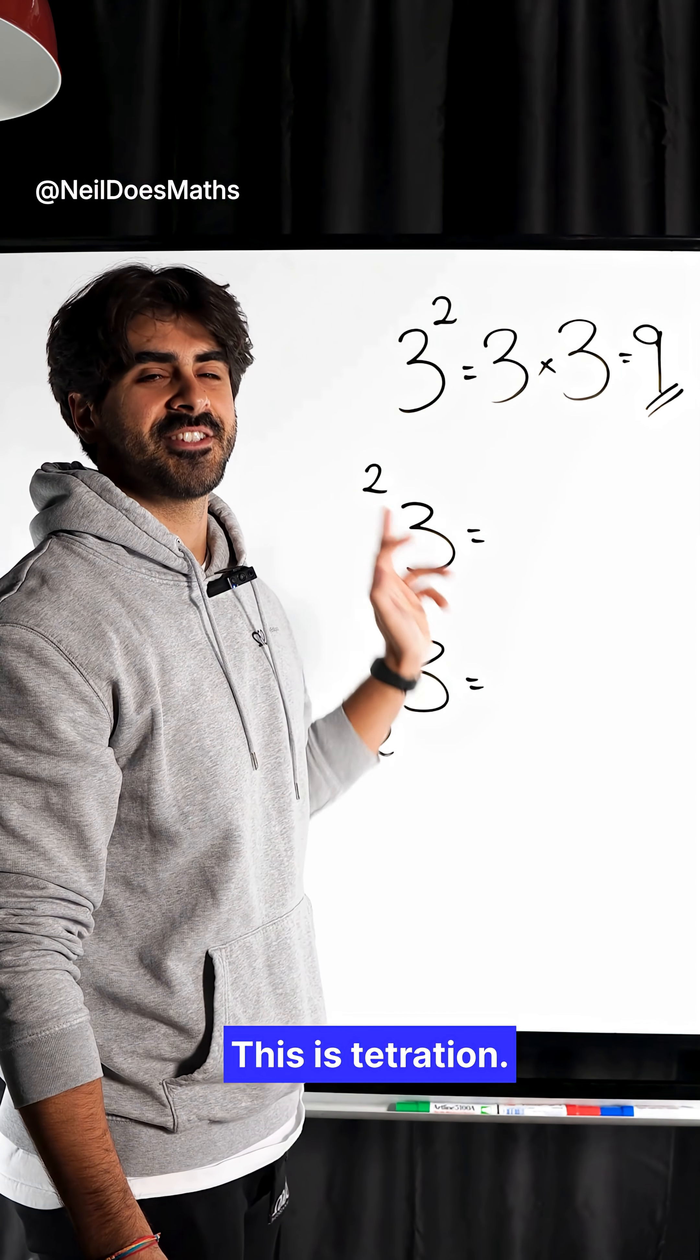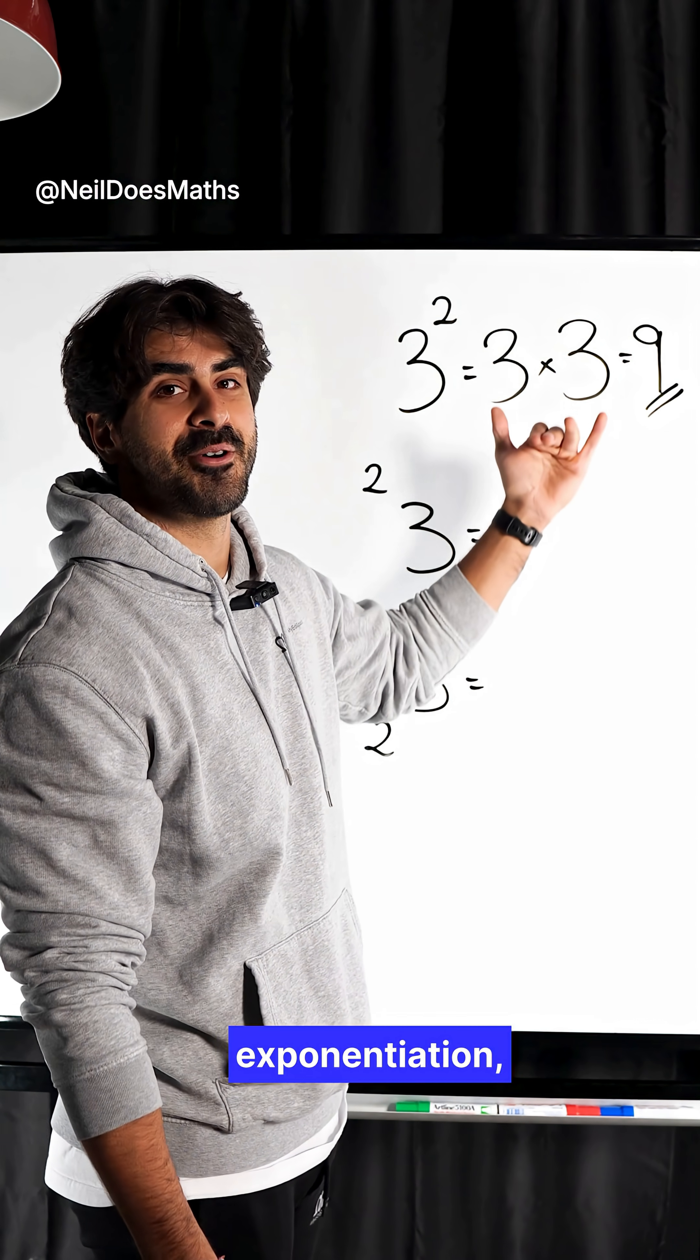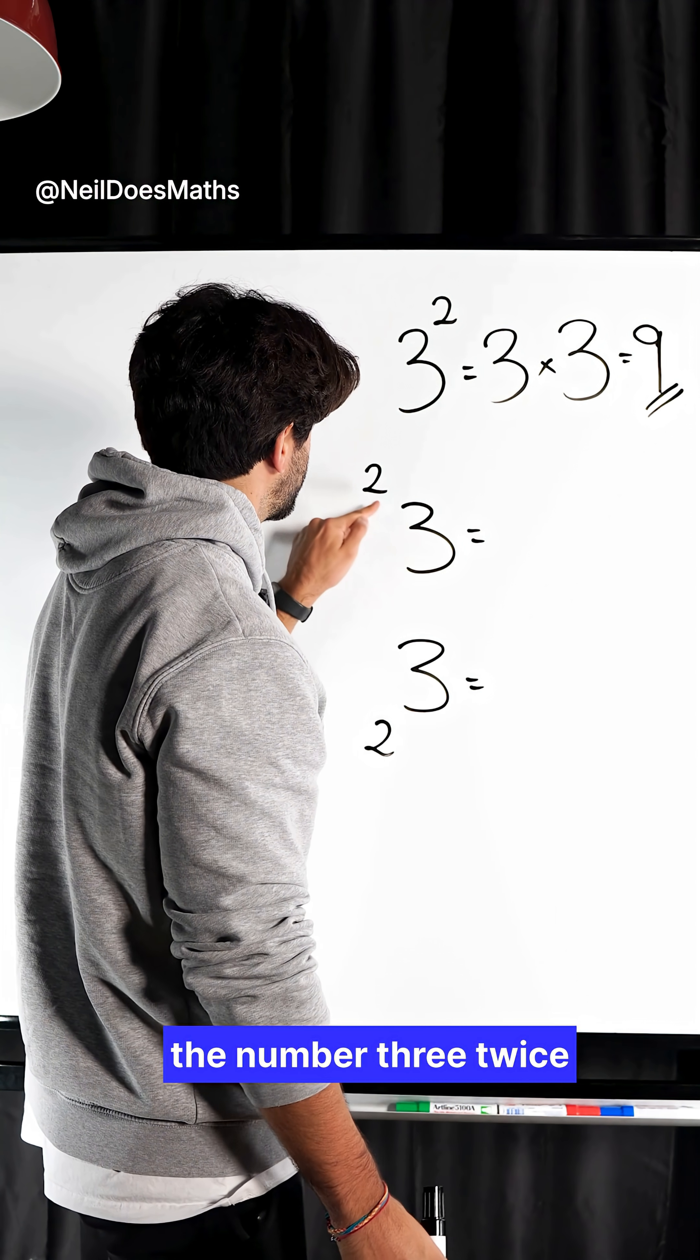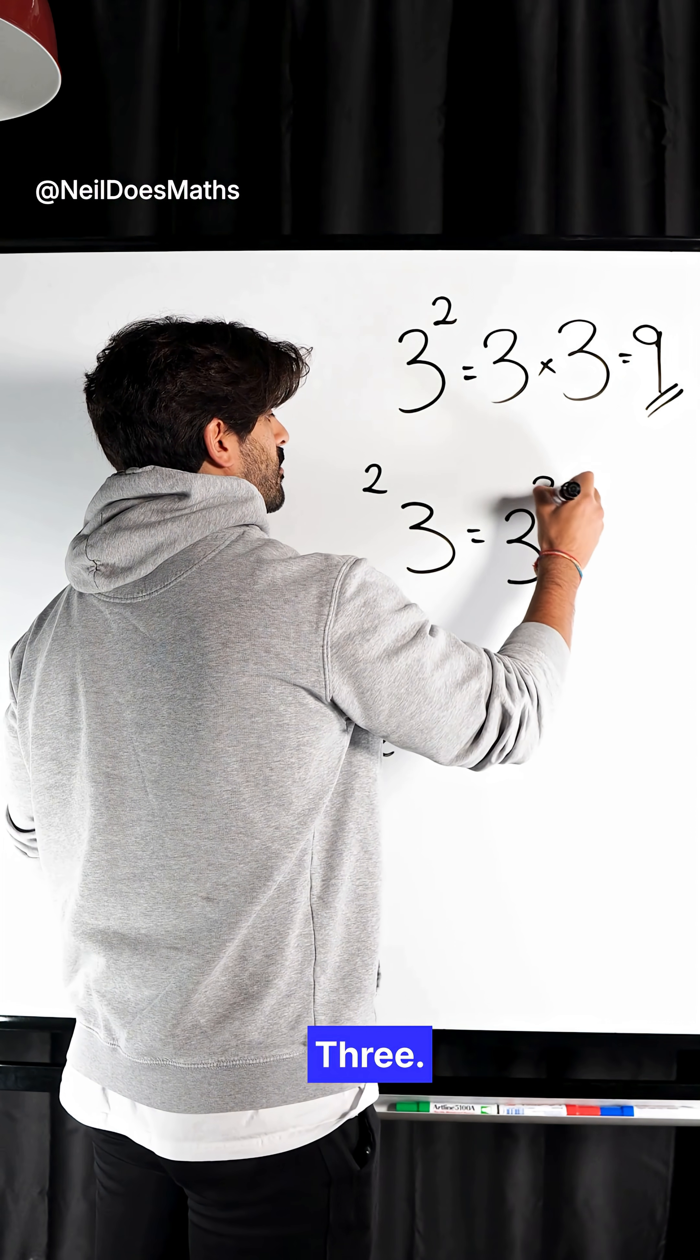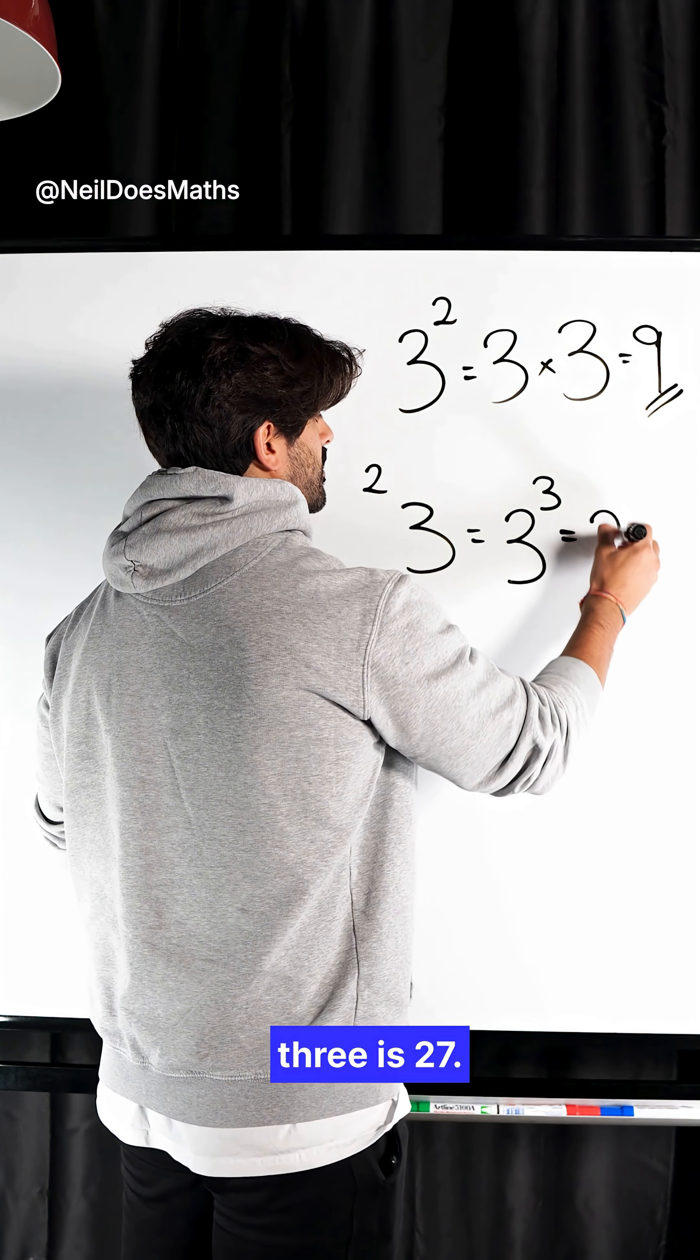This is tetration. Tetration means repeated exponentiation, which means power tower. We're rewriting the number three twice as part of a power tower. Three to the power of three. So if this was a three, I'd put another three. Three to the power of three is 27.